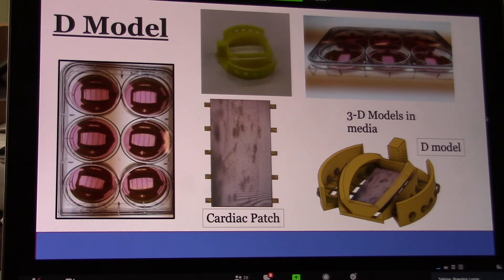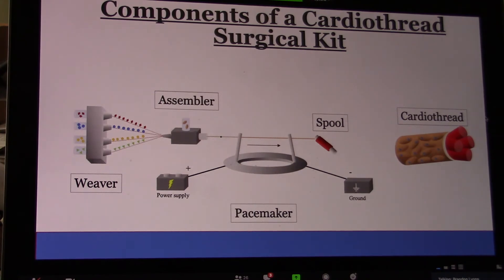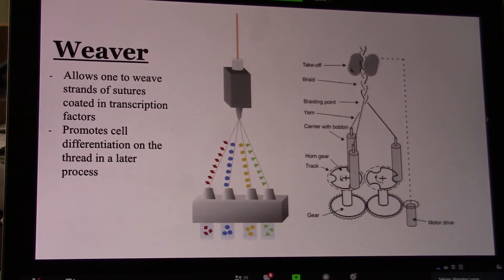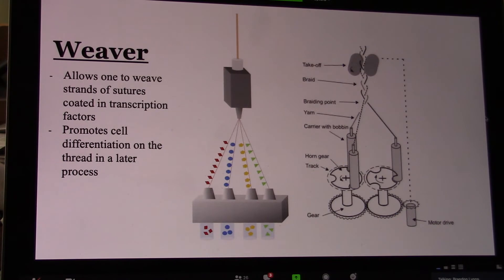This is our Cardiothread surgical kit. Because sterility and safety are cornerstones of safe medical care, we wanted to construct a Cardiothread in the most expeditious and clean manner possible. All components are made from 3D-printed material. First, we have the weaver, which coats the sutures in transcription factors, promotes cell differentiation, and serves as a good starting point for the rest of the experiment.